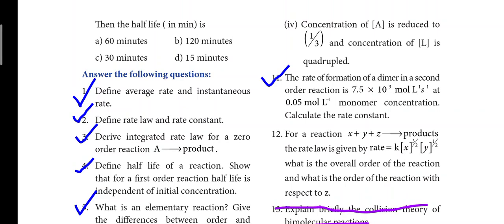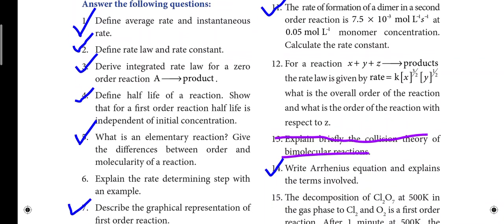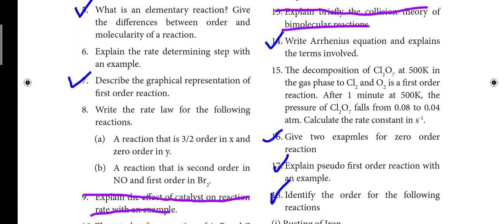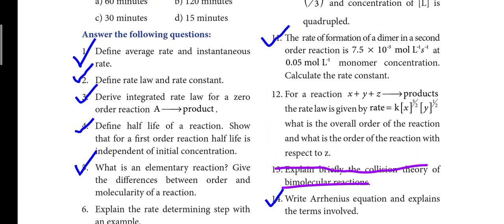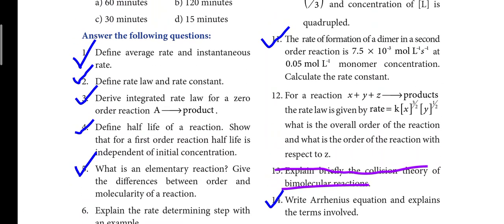Let's talk about Chemical Kinetics — we have a lot of problems. For theory questions, the first important question: define average rate and instantaneous rate. It is important — two marks.